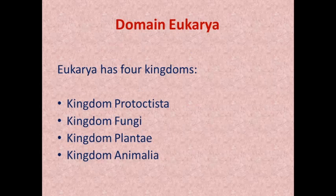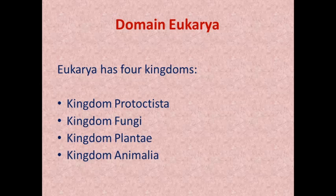Domain Eukarya is further divided into four kingdoms in your syllabus. There is no further division given for domain Bacteria and domain Archaea, but for domain Eukarya four kingdoms are given: kingdom Protocytista, kingdom Fungi, kingdom Plantae, and kingdom Animalia.